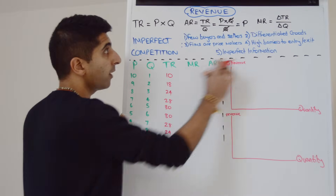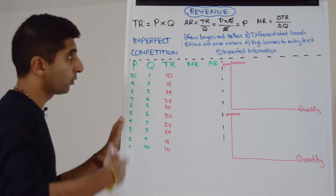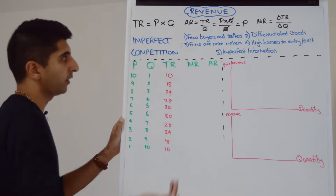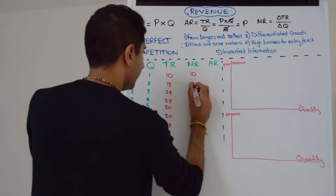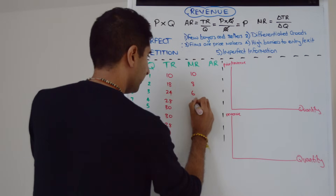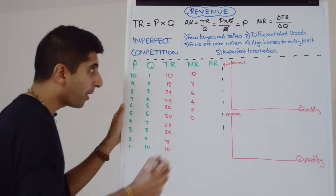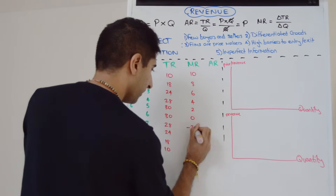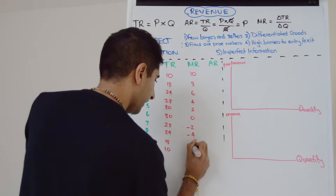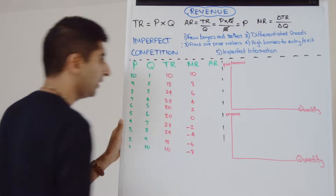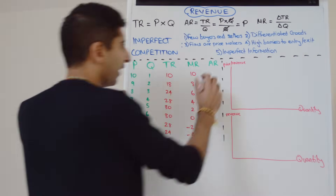Let's do marginal revenue, which is the change in TR over the change in Q. The change in Q is always 1, so that makes our life very easy. We go to 8, to 6, to 4, to 2, to 0. And then MR can go negative — and it does here: to minus 2, to minus 4, minus 6, and then minus 8 to finish. Average revenue is just the price — that's our little trick. Lovely trick.